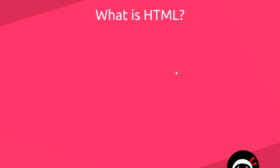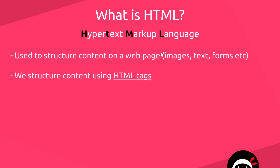Before we start to code anything, I just want to take a few minutes to talk about what HTML actually is and also what CSS is, just so we've got a vague overview before we dive into the code. HTML stands for Hypertext Markup Language — that's where we get the name from. It's a markup language, not a programming language. We use HTML to structure content on a web page: things like text, images, and forms. We do that by using what's known as HTML tags, which represent different types of content or information on a web page. You might also hear these described as HTML elements, but they are pretty much one and the same thing.